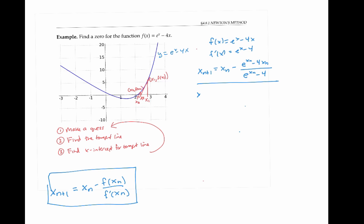Let's start with, for example, x₁ = 3, then x₂ is going to be 3 - (e³ - 4×3)/(e³ - 4). Plugging this into a calculator, I get x₂ = 2.4973.